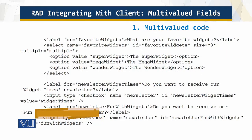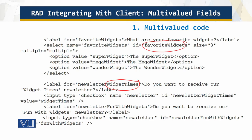This is the multi-valued code which we will be covering in this module. The first form field is a multi-select list box, allowing the user to pick one or more or no options. The second one is two form fields — checkboxes with the same name 'newsletter' but different values: 'widget times' and 'fun with widgets'. So we have 'favorite widgets', 'widget times', and 'fun with widgets' as our values here.